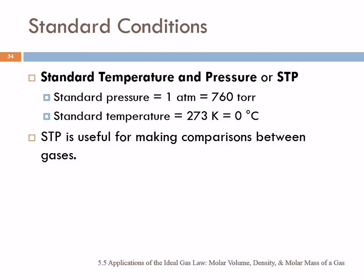What can we do with the ideal gas law? We can do a lot of different things. First, we have to introduce the idea of standard conditions. As we've seen, there are a lot of variables involved with a gas, so we find it convenient to establish standard temperature and pressure — just a point of reference. For gases, standard temperature and pressure is often abbreviated STP.